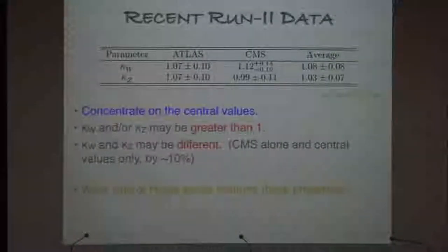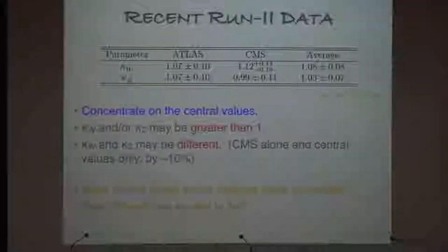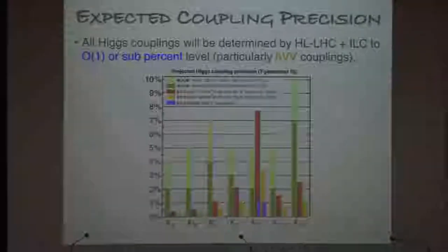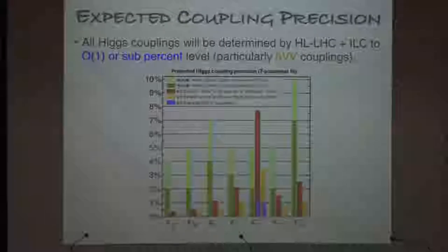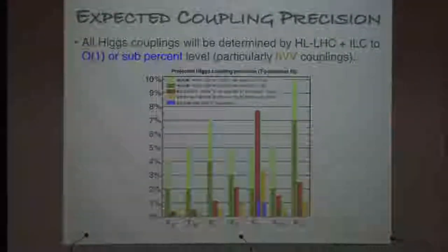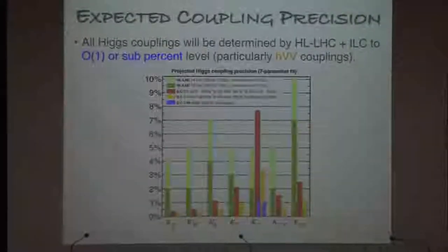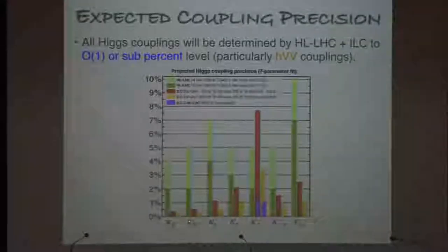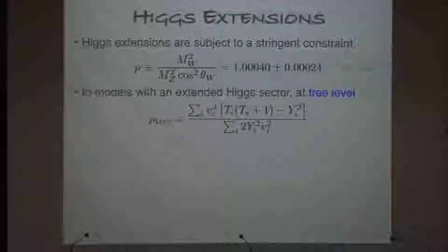We want to ask: what kind of models feature these two properties, and in particular for the second one, how different can they be? Even though current precisions don't allow firm conclusions, let's concentrate on the central values. Studies show that at the HL-LHC you can reach a few percent level precision for kappa_Z and kappa_W, and with the ILC you can go down to sub-percent level. So it is possible that in the future with HL-LHC or ILC we can make precision measurements and determine whether they are really different.